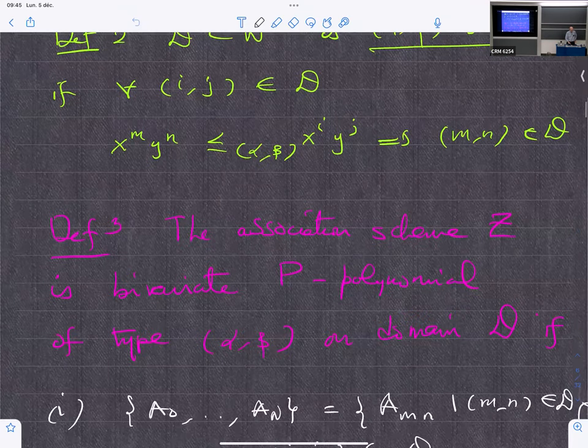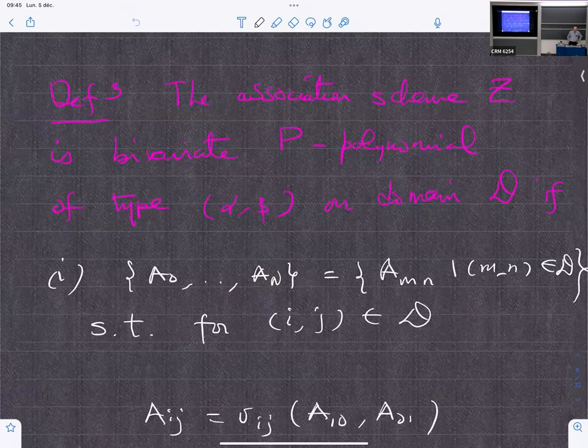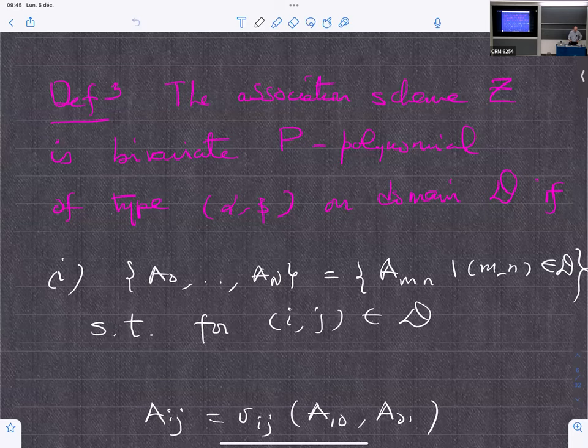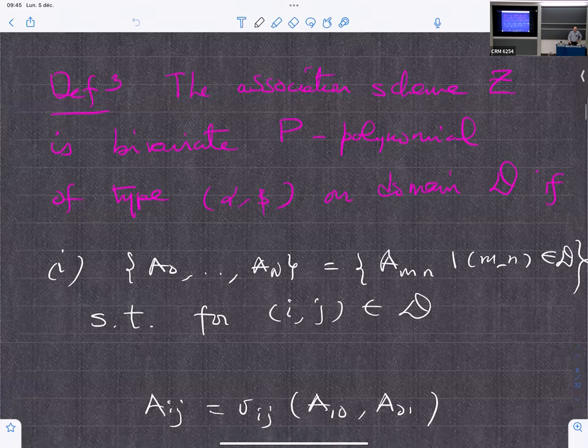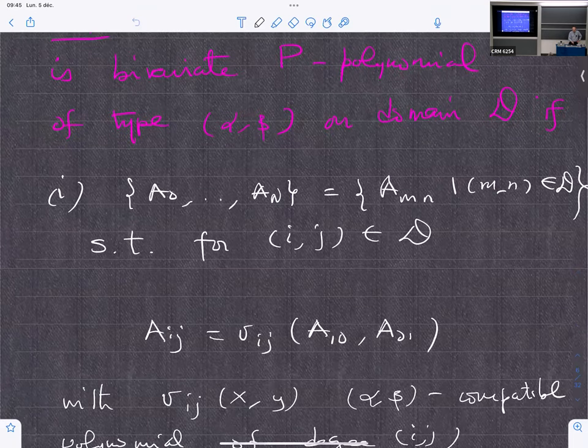I should not go too quickly. You introduce two parameters, alpha and beta. And you say that monomials are ordered with respect to this partial order of type alpha-beta if you have these two conditions.